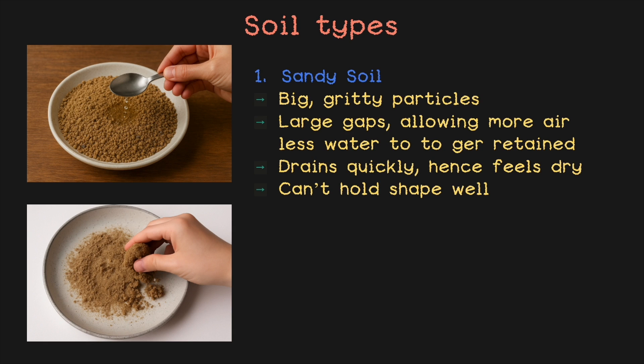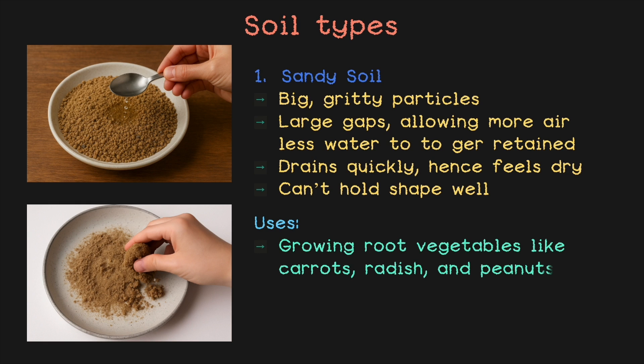But that does not mean sandy soil isn't useful. It can retain a small amount of water and is great for specific root vegetables like carrots, radish, and peanuts. Sandy soil is loose and drains water quickly, so the long roots of these vegetables can push down easily and don't rot in soggy ground. It is also useful for filling sand-based play areas you see in schools and apartments, because it doesn't clump and lets rainwater drain away, keeping it safe for landings.